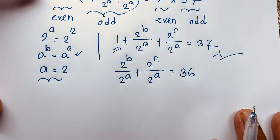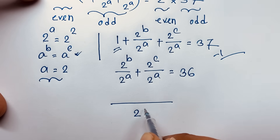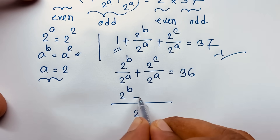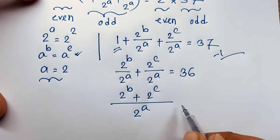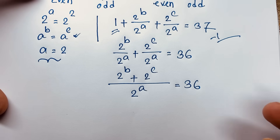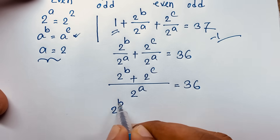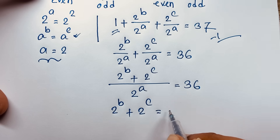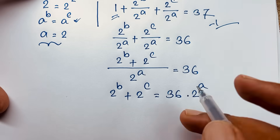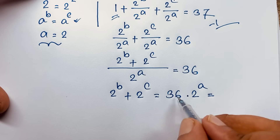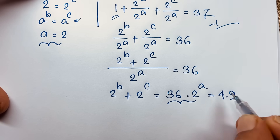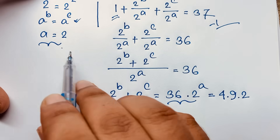The least common denominator is 2^a, so combining: (2^b + 2^c) / 2^a = 36, meaning 2^b + 2^c = 36 × 2^a. Since a = 2, this gives 2^b + 2^c = 36 × 4 = 144. Now I simplify 36 as 4 × 9, and 2^a = 4, so 36 × 4 = 144.